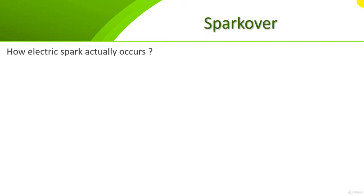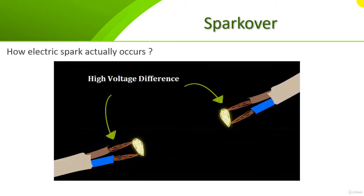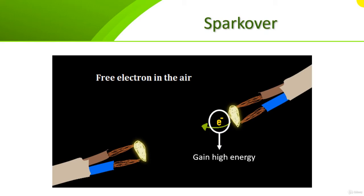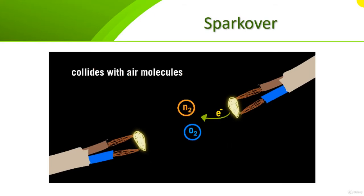To understand how an electric spark actually occurs: a high electric field is needed between two conductors with a very high voltage difference. In the air between the conductors, free electrons exist naturally due to ultraviolet and cosmic radiation. When subjected to a high electric field, these free electrons gain high kinetic energy and their speeds increase.